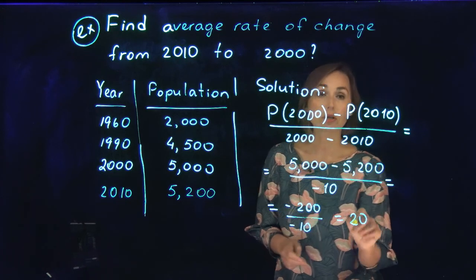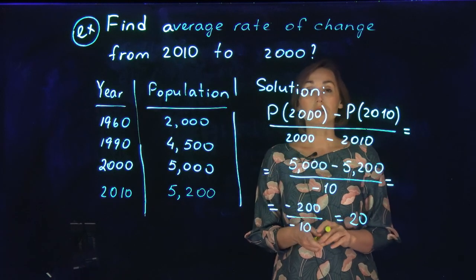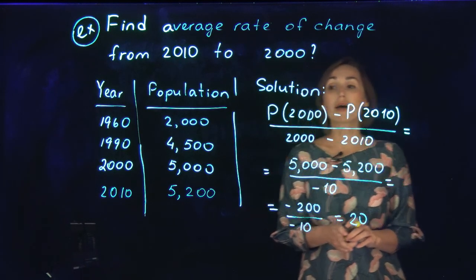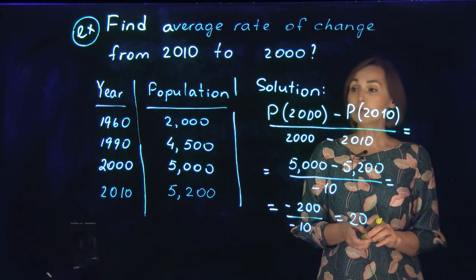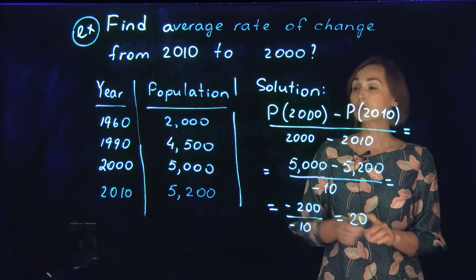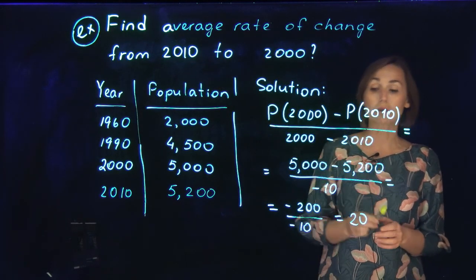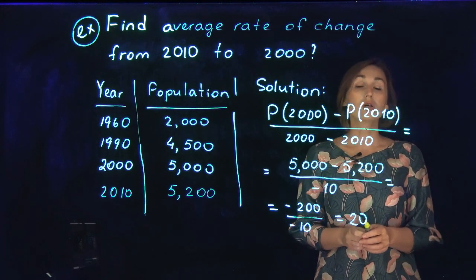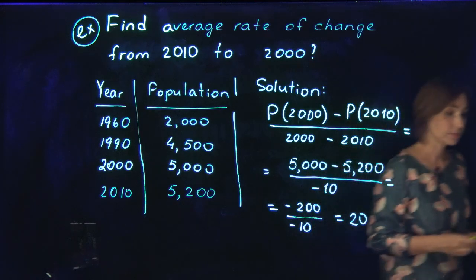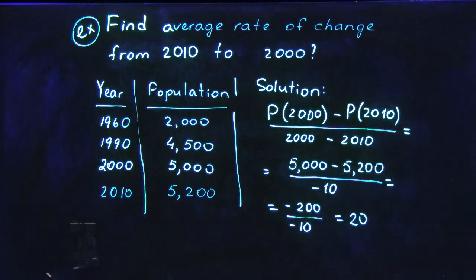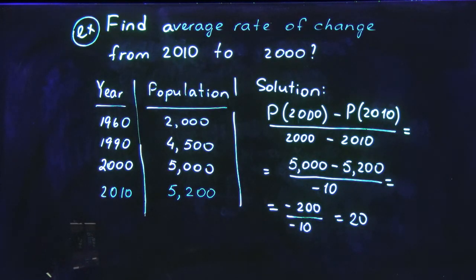The result is 20. That means the average rate of change of the population function from 2010 to 2000 is 20.